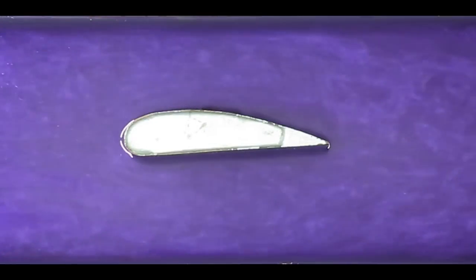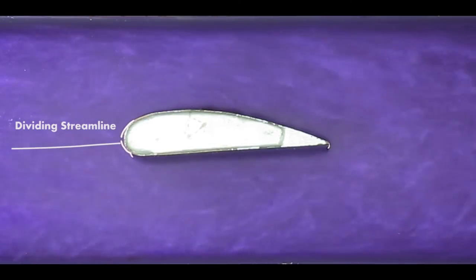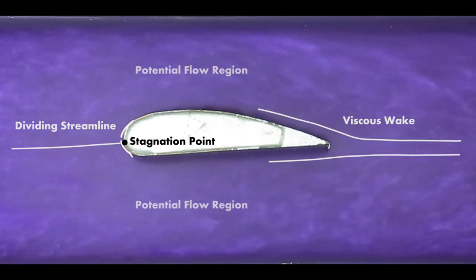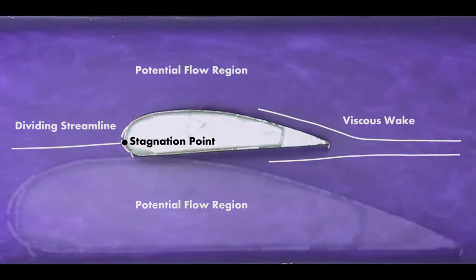So what we have here is flow over an airfoil. There's a dividing streamline at the front, and then that eventually comes to a stagnation point where the velocity is zero. And then on the back side of the airfoil, we can see there's a viscous wake. Outside of that is what we would refer to as being the potential flow region where viscosity is not important.